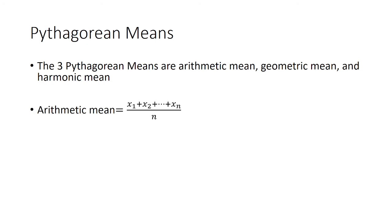The arithmetic mean is the most common. This is just adding up all the numbers and dividing by how many there are.